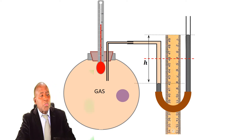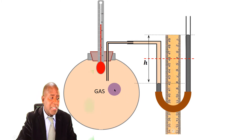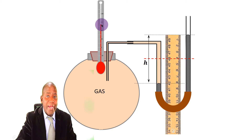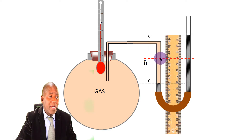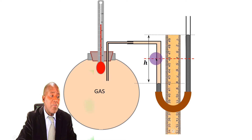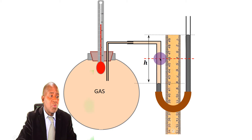Now suppose we heat up this gas. When we heat up the gas you can see the temperature rises, and the gas pressure is going to increase. So the pressure on this mercury surface has increased — that is why that surface has been pushed down. Its pressure is greater than atmospheric, so this level pushes the other one up: this one rises while this one falls.